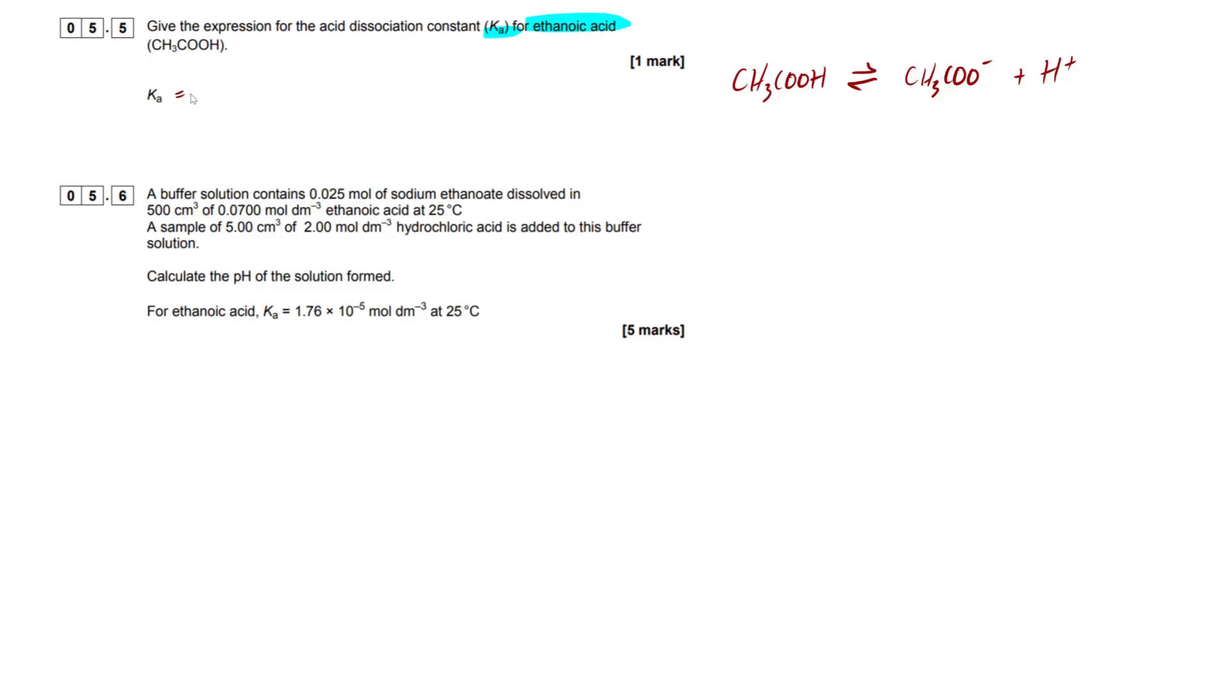Now with Ka, just like with Kc or any other equilibrium expression, we're going to have our products on the top of the fraction and the reactants on the bottom, making sure that we include the concentration square brackets. So at the top is going to be our product, so CH3COO- times H+, all over our reactants, CH3COOH. Easy as that. I'm going to swiftly move on to the next question here, which is what we really want, the 5 marker for buffers.